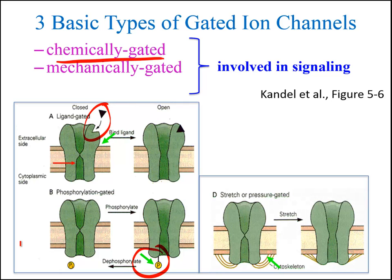The third type of stimuli are mechanical stimuli — for example, stretch. The energy associated with a mechanical stimulus such as stretch is transferred to cytoskeletal elements attached to the channel, which causes the channel to gate. Examples involving mechanically-gated channels include the stretch-activated channels in sensory neurons of the stretch reflex and tendon reflex.